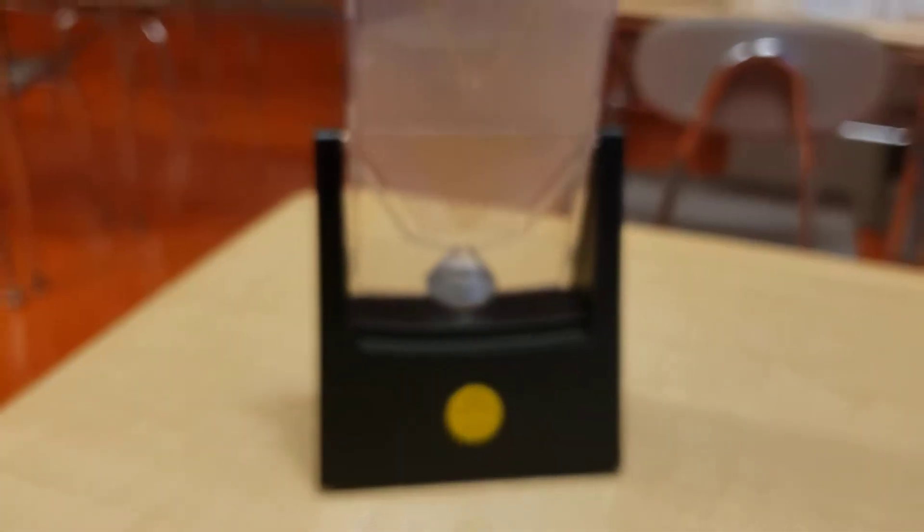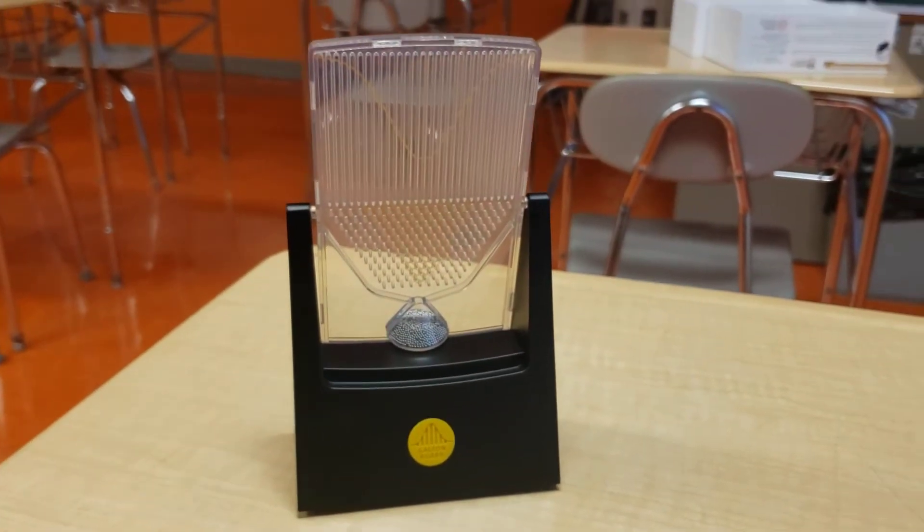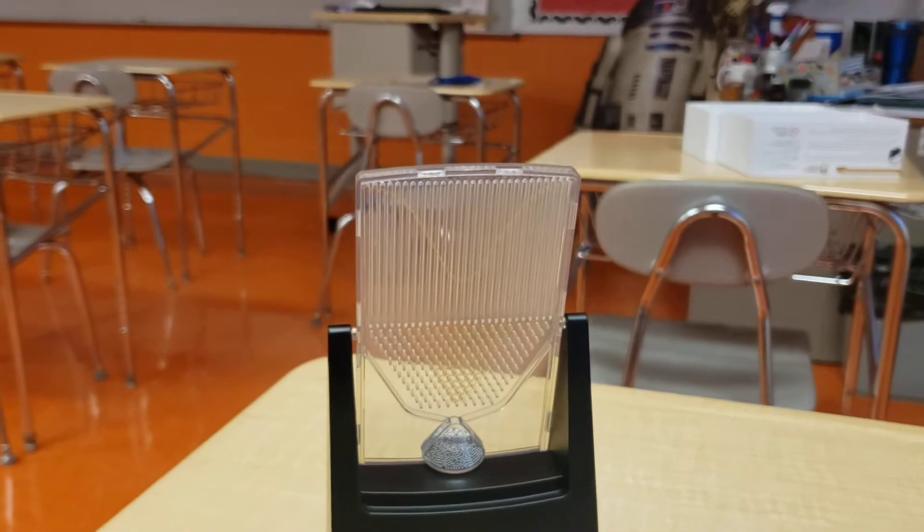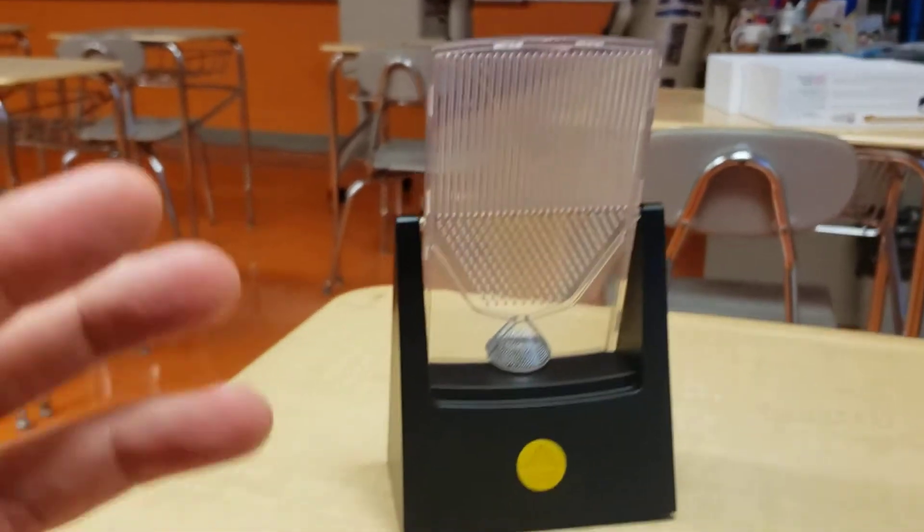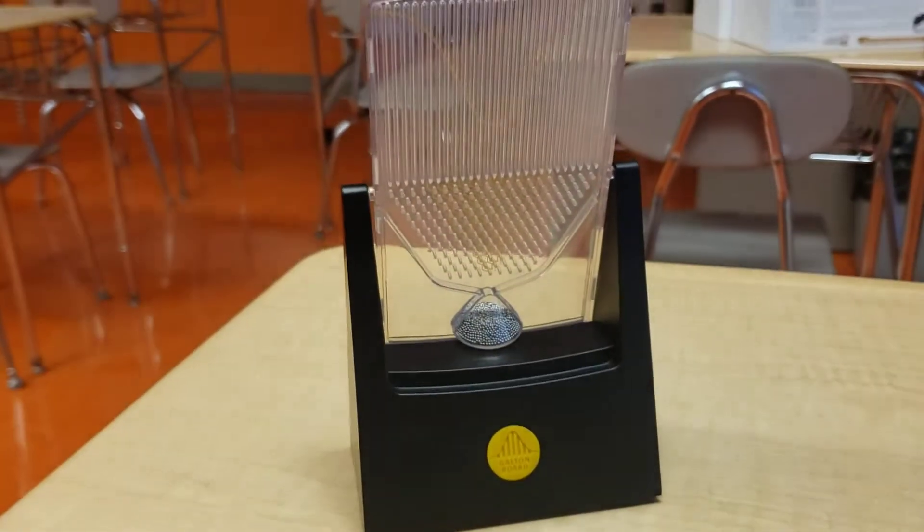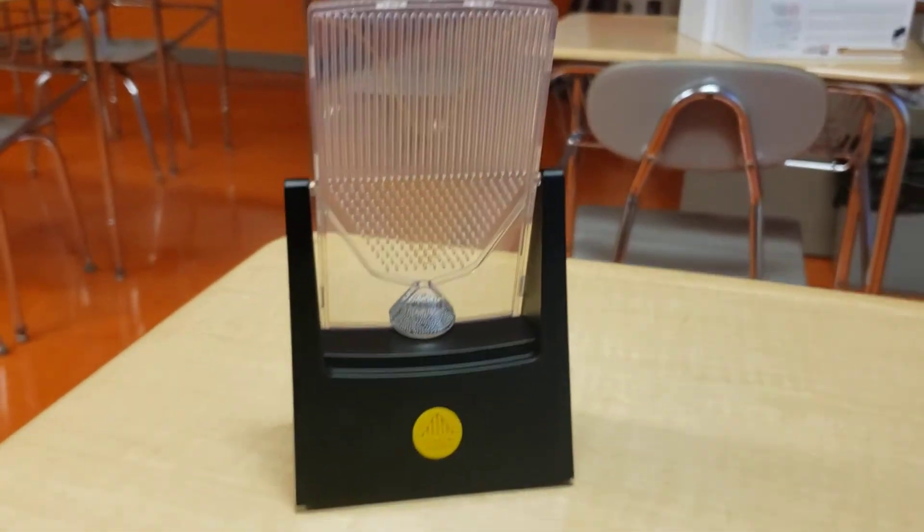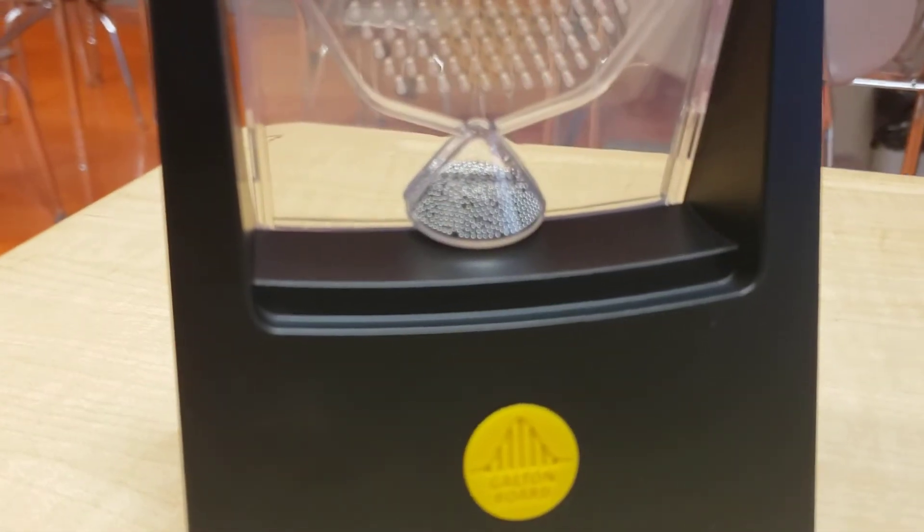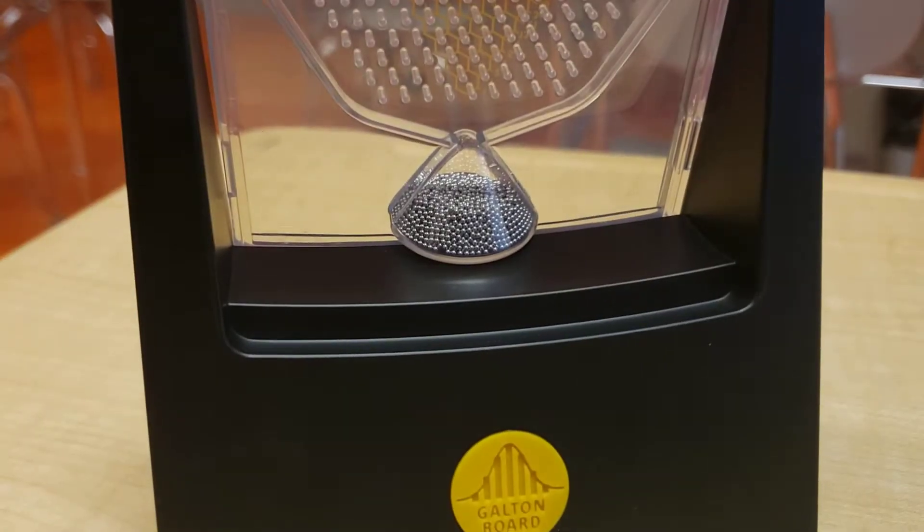It's called a Galton board. This thing is amazing. If you've ever seen those Newton's cradles that you can hang out on the desk, that's more of a physics thing where you pull the ball and it'll go back and forth. This is sort of like the stats version. So there are 3,000 ball bearings in here, 3,000 up in this hopper.